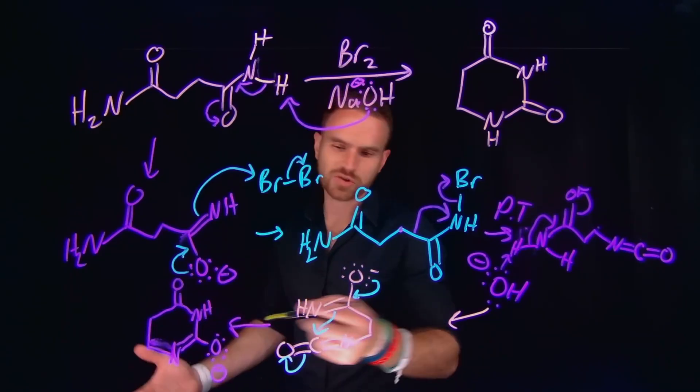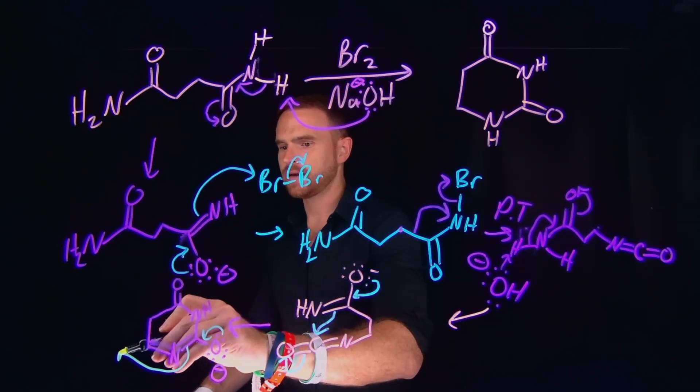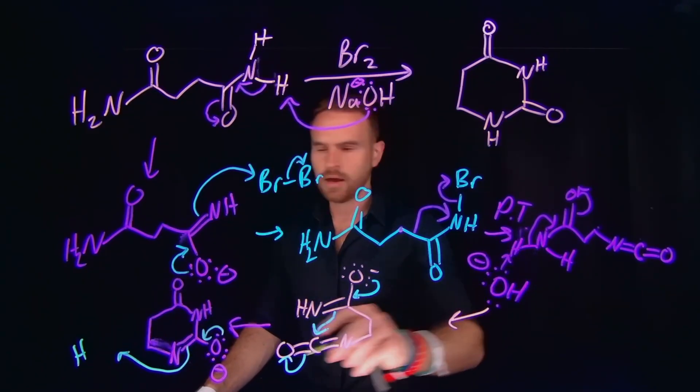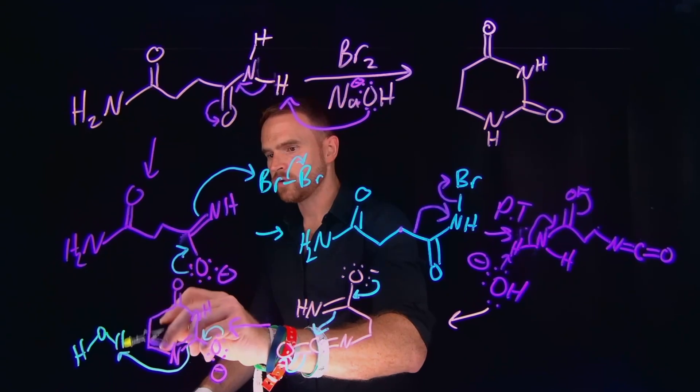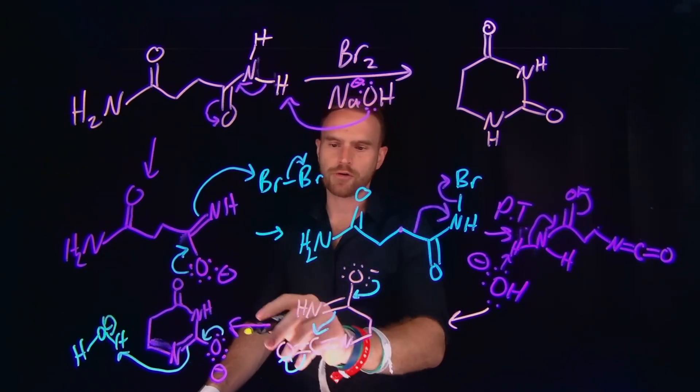So then again, we've generated a pseudoenolate where these pi electrons can come down, and this can come and attack our water molecule, which we generated when we deprotonated the amine using our hydroxide, which means we're basically just doing a proton transfer, allowing us to regenerate our hydroxide and also generate our final product.